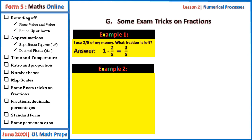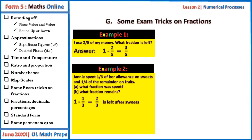Example two: Jane spends a third of her allowance on sweets and a quarter of the remainder on fruits. What fraction was spent? What fraction remains?